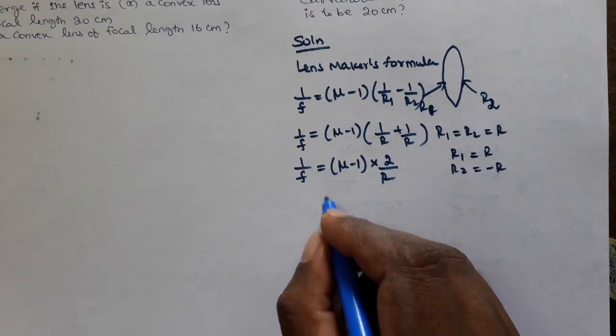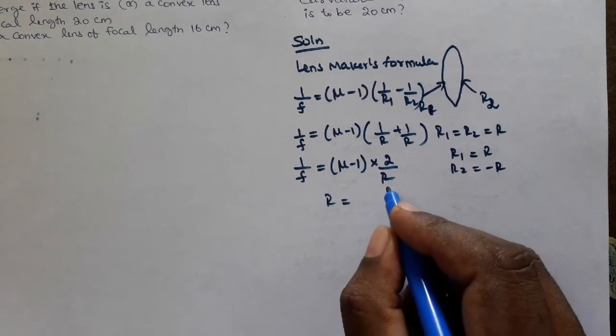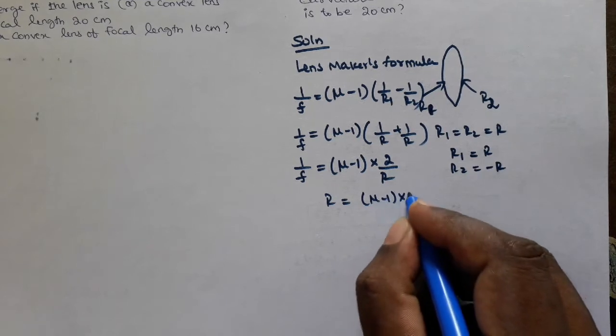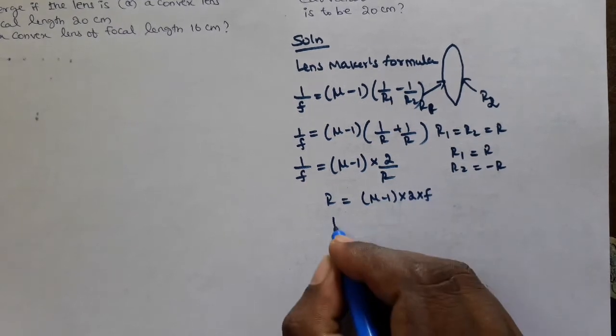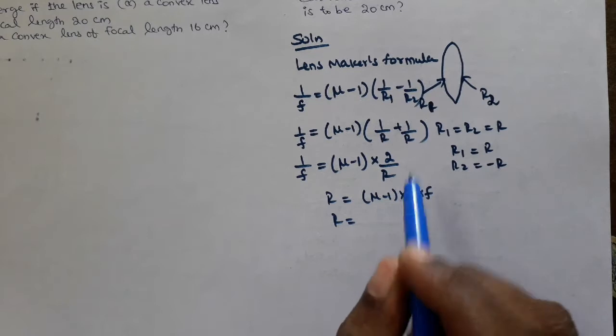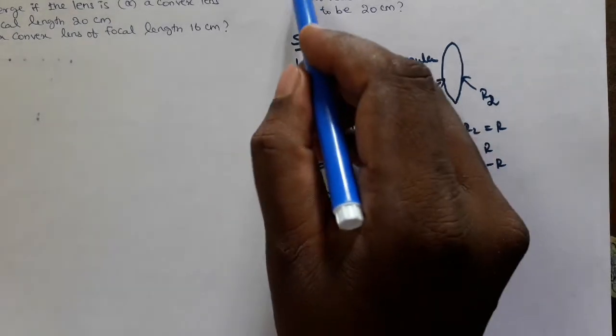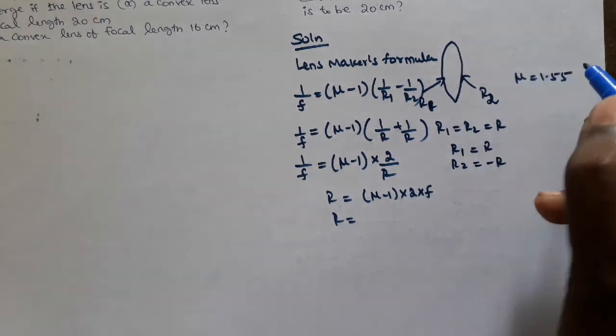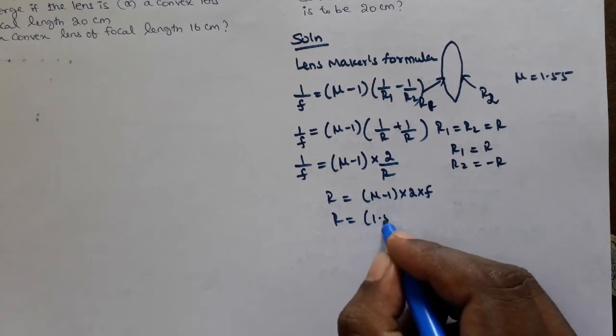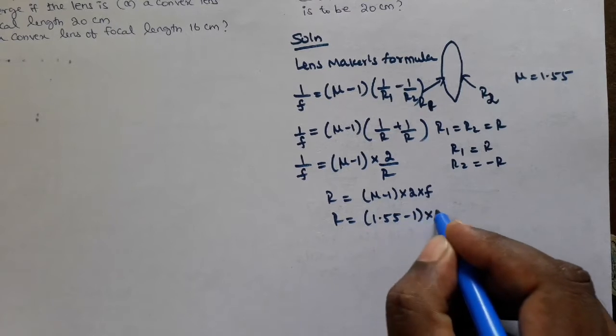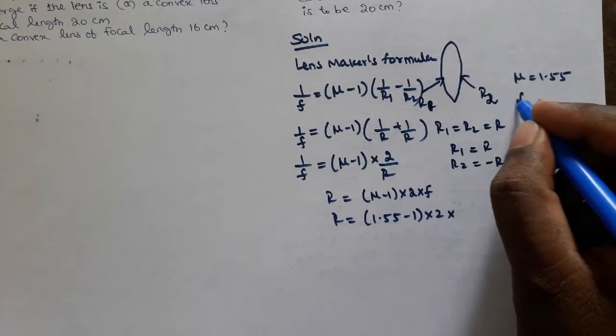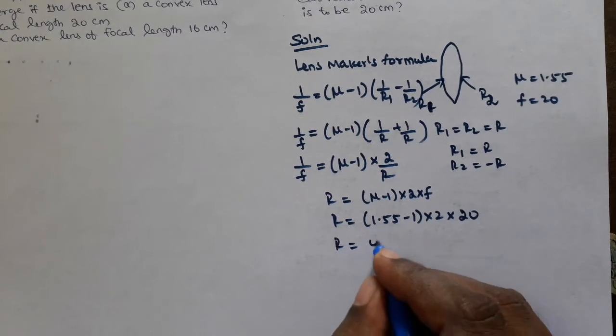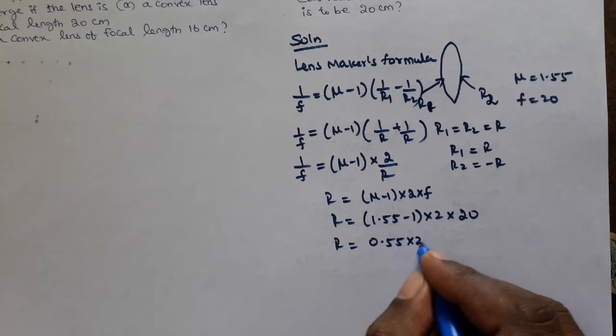Now we need to find R for focal length of 20 cm. Substituting values: μ = 1.55 and F = 20 cm. So R = (1.55 - 1) × 2 × 20.